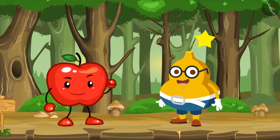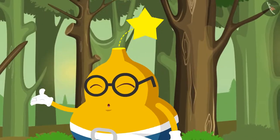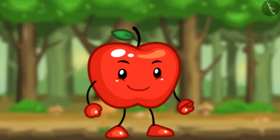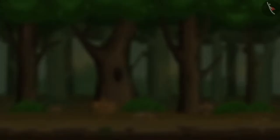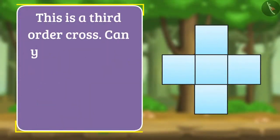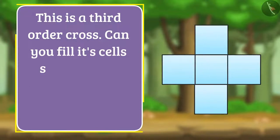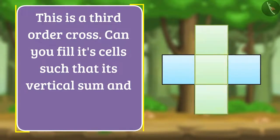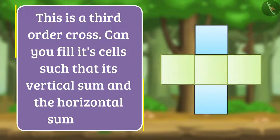Fruity asks, Which puzzle did Appu give you? Appy says, This is a Third Order Cross. Can you fill its cells such that its vertical sum and the horizontal sum is 27?